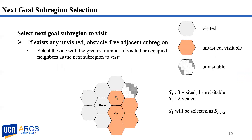We seek to complete tasks within the unknown region efficiently. It is undesirable to leave any isolated subregions unvisited. The cost of coming back to failed or halted areas later can be avoided by finishing all nearby areas first before moving away. Hence, the strategy is as follows: at the robot's current position, if there exist unvisited, obstacle-free adjacent subregions, the robot will select the one with the most visited or occupied neighbors as the next subregion.